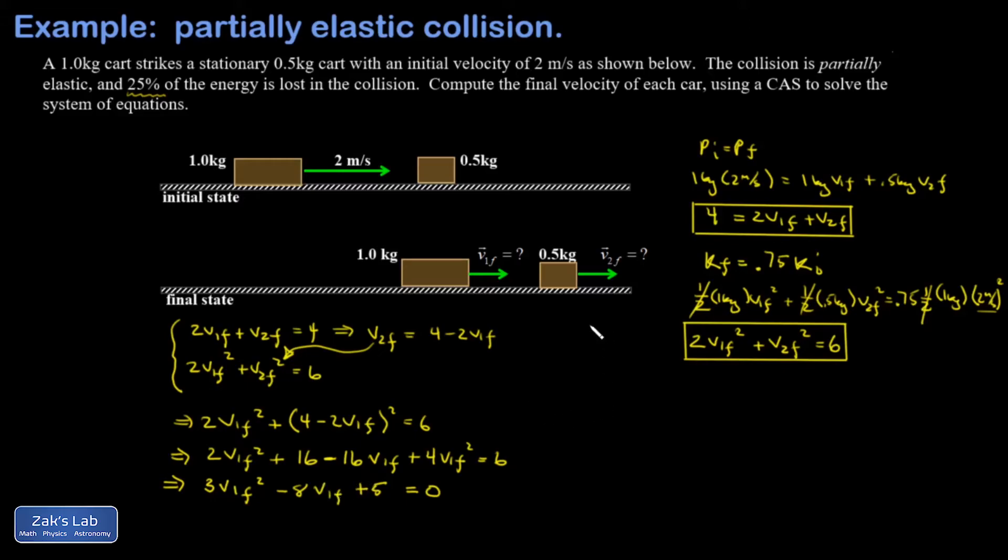If we're lucky, we might be able to factor this. The two binomials would start this way. I could do a negative 5 and a negative 1. That works: 3V1 final squared minus 3 times V1 final minus 5 times V1 final, so the cross term works, plus 5. I get two possible solutions: V1 final is either 1 meter per second, or V1 final is 5/3 meters per second.